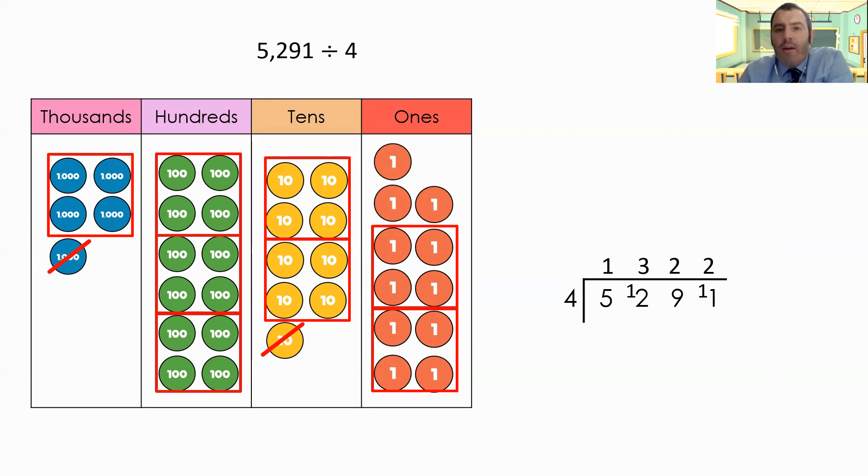So again, remainder three. So if you're using the written method, how it's there is perfectly acceptable to answer it with. I've added it at the top there. 1322 with a remainder of three.